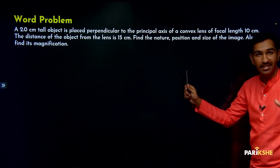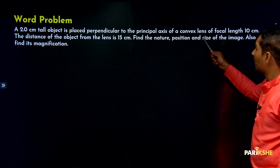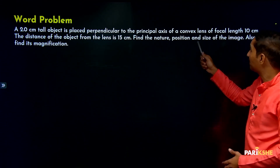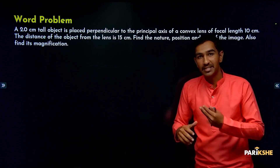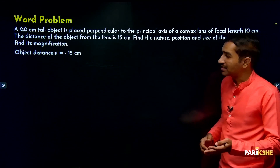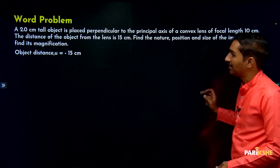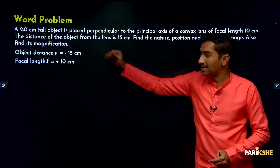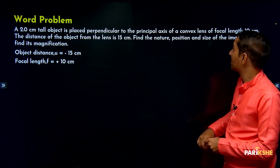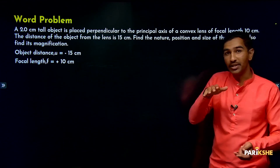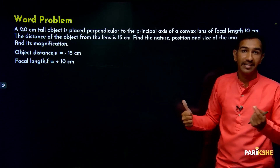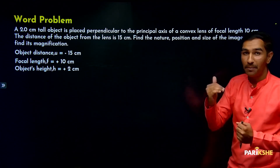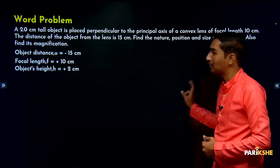Now the third problem: a 2.0 centimeter tall object is placed perpendicular to the principal axis of a convex lens of focal length 10 centimeters. The distance of the object from the lens is 15 centimeters. Find the nature, position, and size of the image, and also find its magnification. Using sign conventions: object distance is minus 15 centimeters. Focal length for a convex lens — converging lens — real image is formed, so focal length f is plus 10 centimeters. Object height h is plus 2 centimeters.